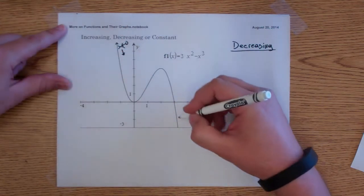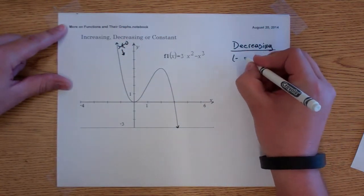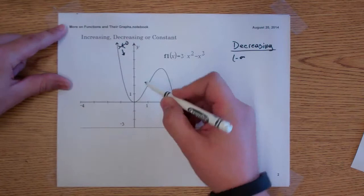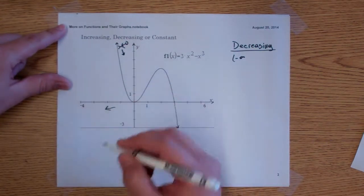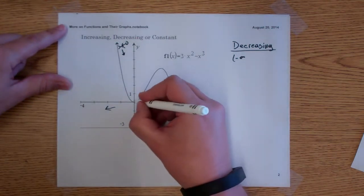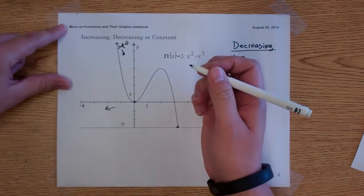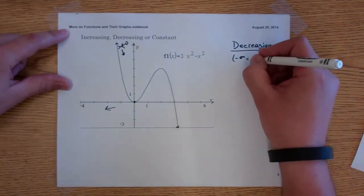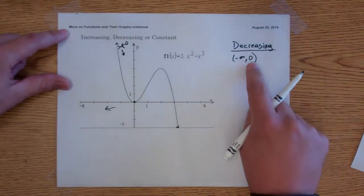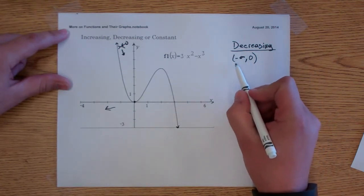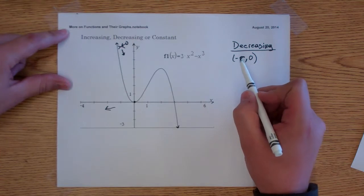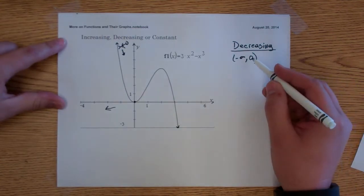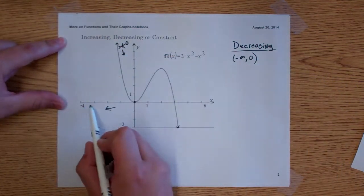This graph goes on forever in both directions, so it comes from negative infinity — remember, we're using the x values, not the y values. As x values go to the left, they are negative, so we come from negative infinity. When we get to x equals 0, we're neither increasing nor decreasing — we're changing from decreasing to increasing, so we can't include 0 in our interval. Parenthesis means does not include; a bracket means does include. So this graph is decreasing from negative infinity to 0.